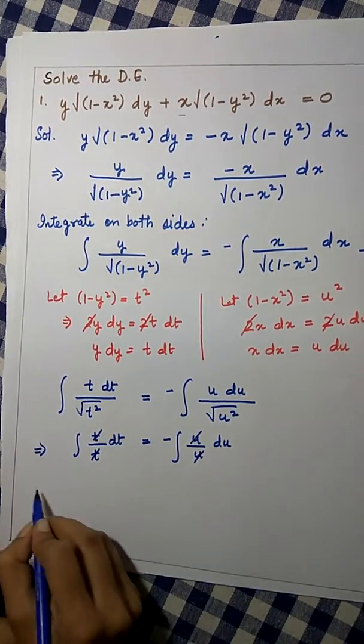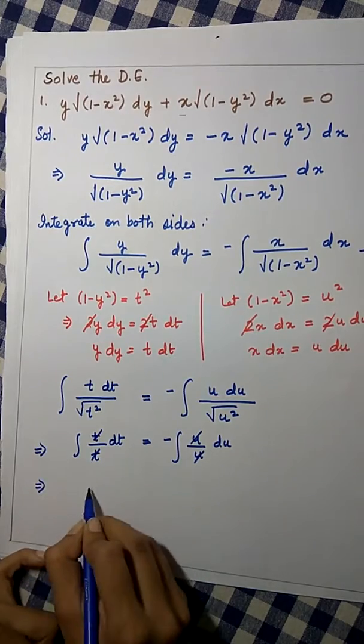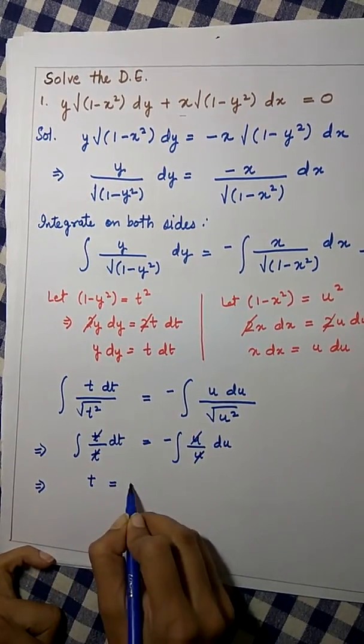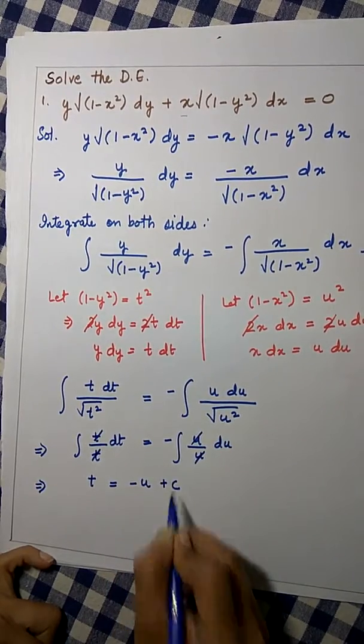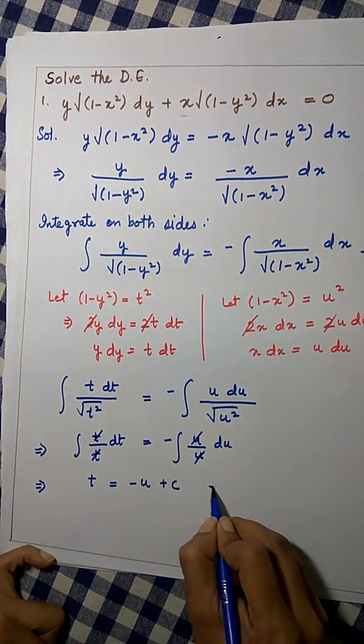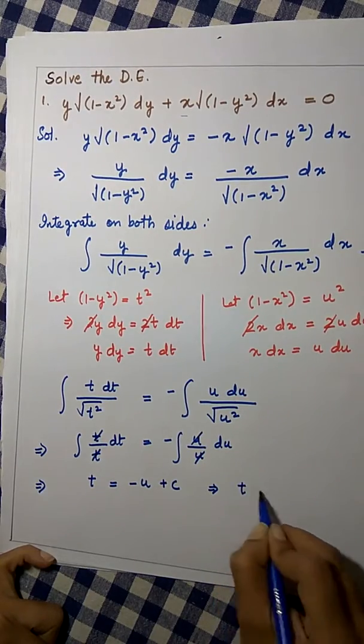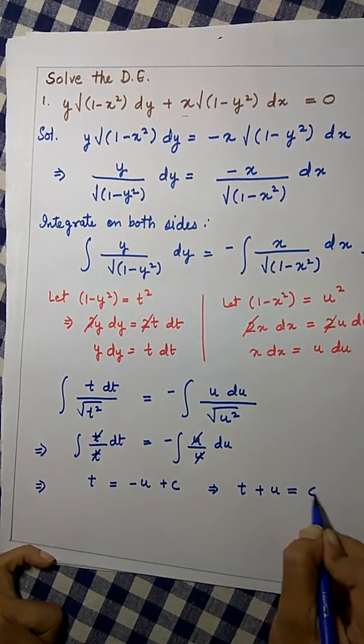We can cancel the like terms. Now, we can integrate this very easily. So, we will get t equals negative u plus c, or t plus u equals c.